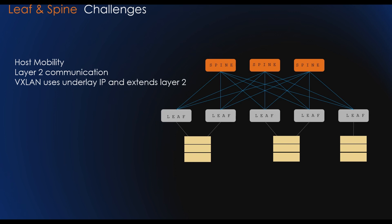However, there are challenges with the leaf and spine architecture. In a pure Layer 3 fabric, the Layer 2 domains are quite small and usually confined to a rack. This results in challenges with host mobility and Layer 2 communications. VXLAN, one of many available network virtualization overlay technologies, uses an underlay IP network and extends Layer 2 segments over a Layer 3 fabric.